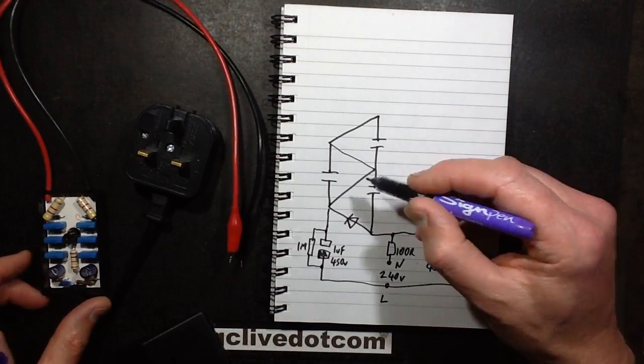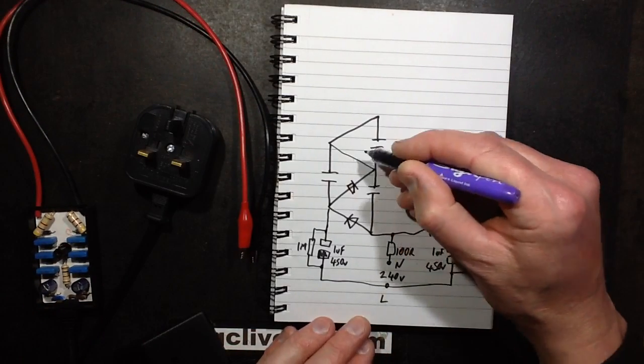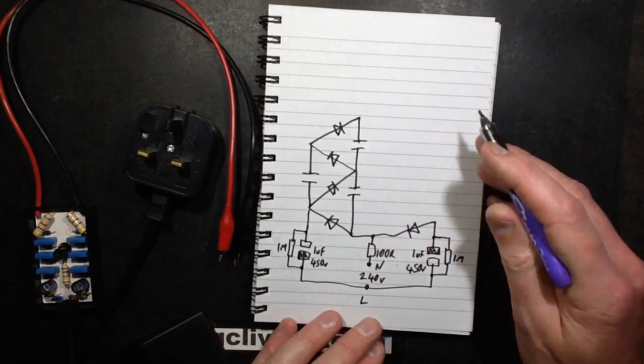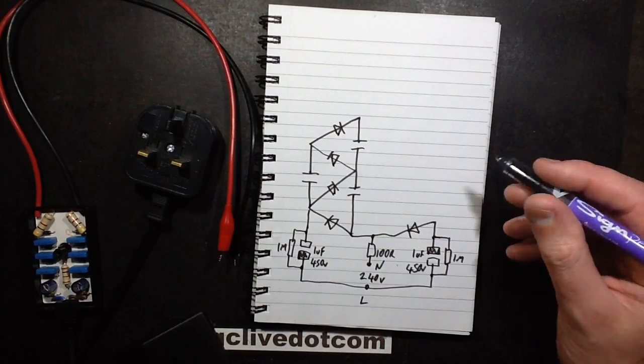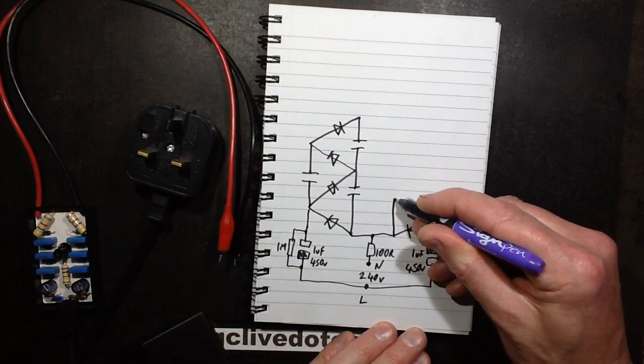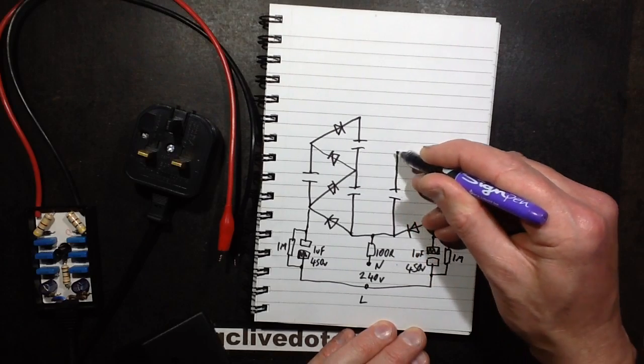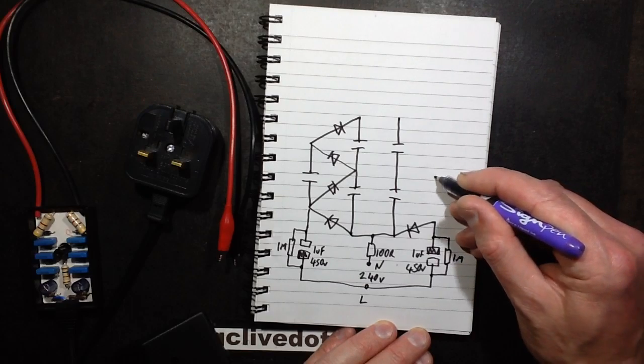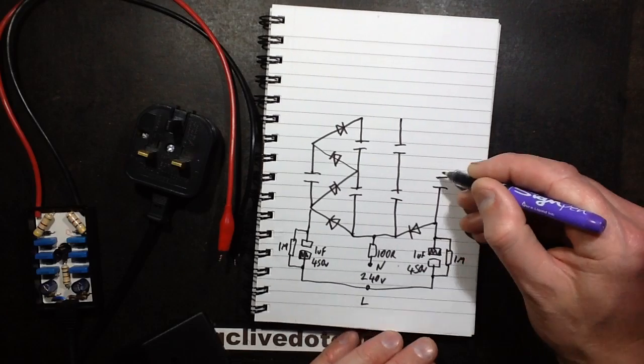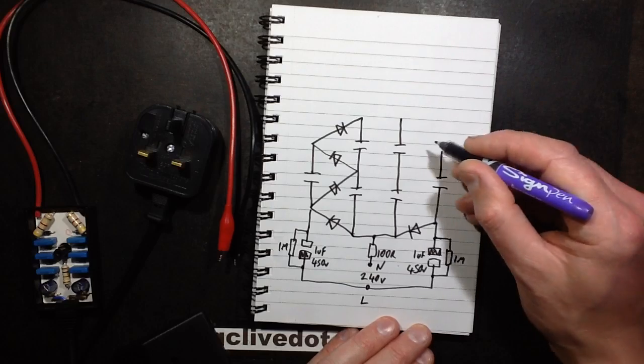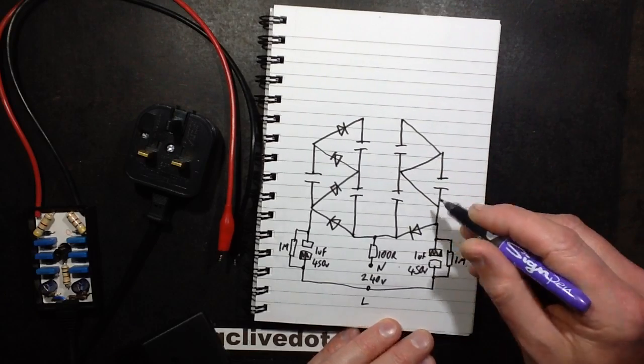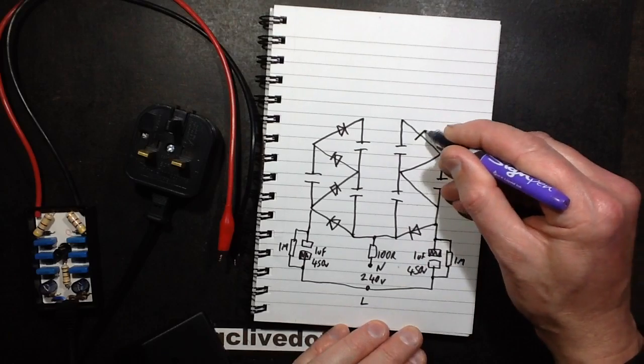These capacitors, they only have to be little capacitors. I think I used 10 nanofarads at 630 volts like ionizer type capacitors. On the positive side all the diodes point towards the tip. On the negative side, let's draw this up, on the negative side all the diodes point towards the power supply, they point down.